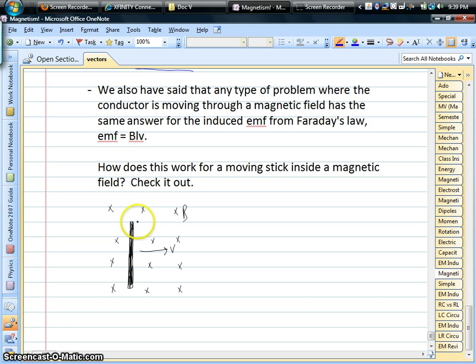But because there's ends to this, those positive charges, if they could move, could only move so far. And they get stuck, and they start collecting on that top side, the top end of this little metal rod. Electrons, of course, move the other way, and the left-hand rule says they move downwards. But they get stuck on the bottom end of the stick.